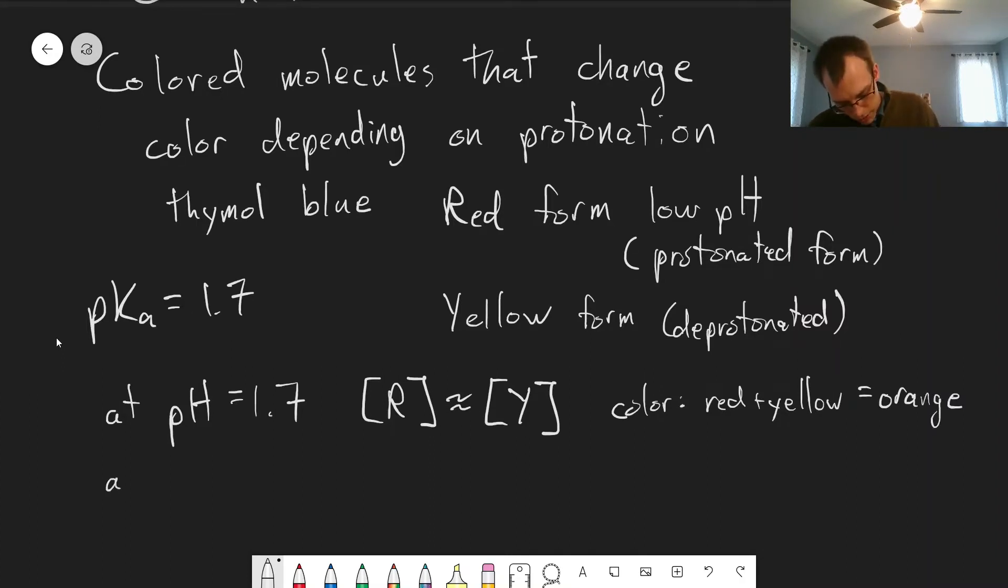Let's go to lower pH. At pH 0.7, this means that the concentration of red will be larger. It will be about 10 times larger than the concentration of the yellow form. So the color of the solution that we get will be just red.